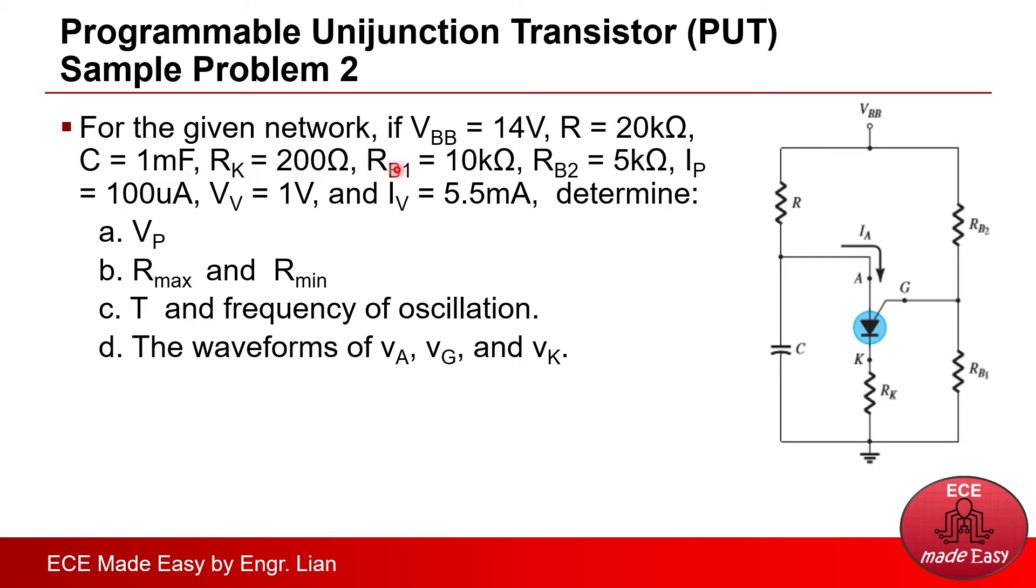RB1 is 10 kilo ohm, RB2 is 5 kilo ohm. If IP is 100 micro ampere, VV is 1 volt, and IV is 5.5 milliamps, determine the following. So let's go through each item.